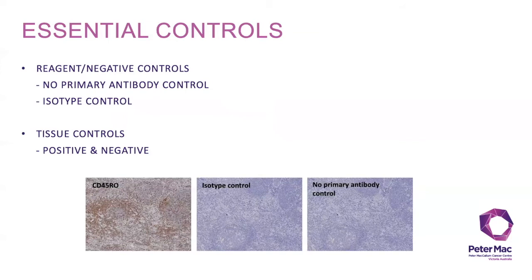It is very important to include appropriate positive and negative controls to accurately validate the sensitivity, specificity and reproducibility of your IHC protocol for a given antibody. These include running reagent controls such as a secondary-only control, which is required to ensure that there is no non-specific binding. An isotype control is also required. This antibody lacks specificity to the target but matches the class, type and species of the primary antibody and helps determine the contribution of non-specific background staining. Positive and negative control tissues are also recommended; try to stick to controls that express endogenous levels of the target instead of overexpression models.